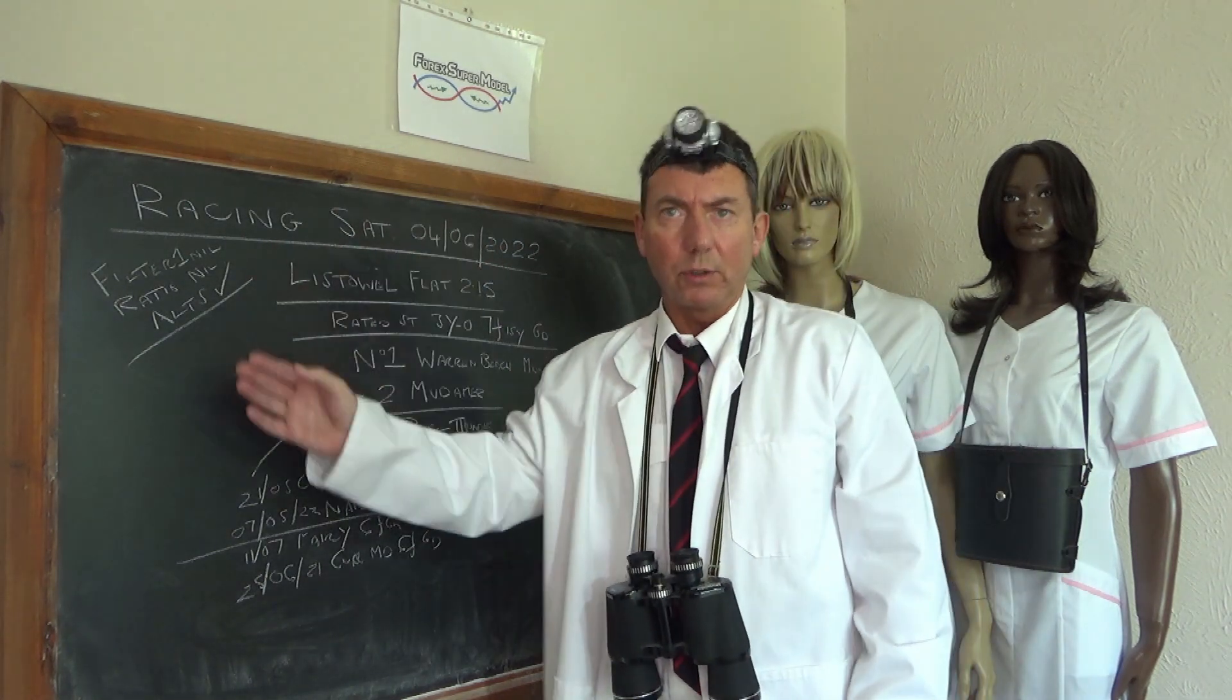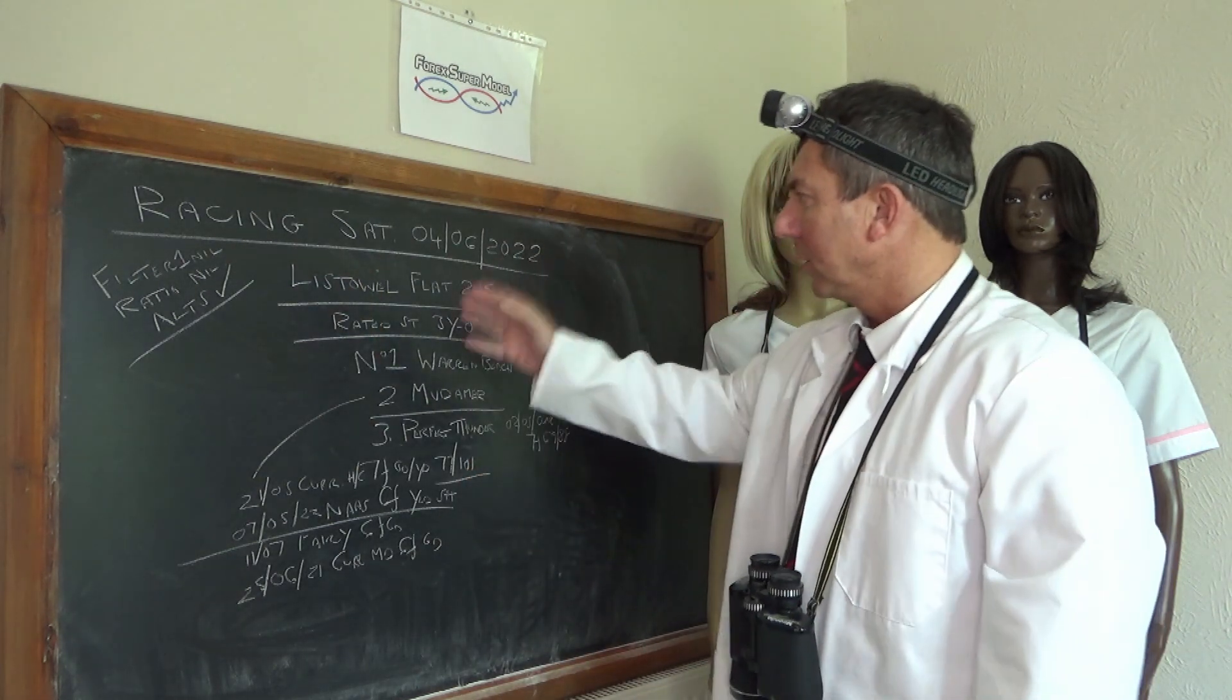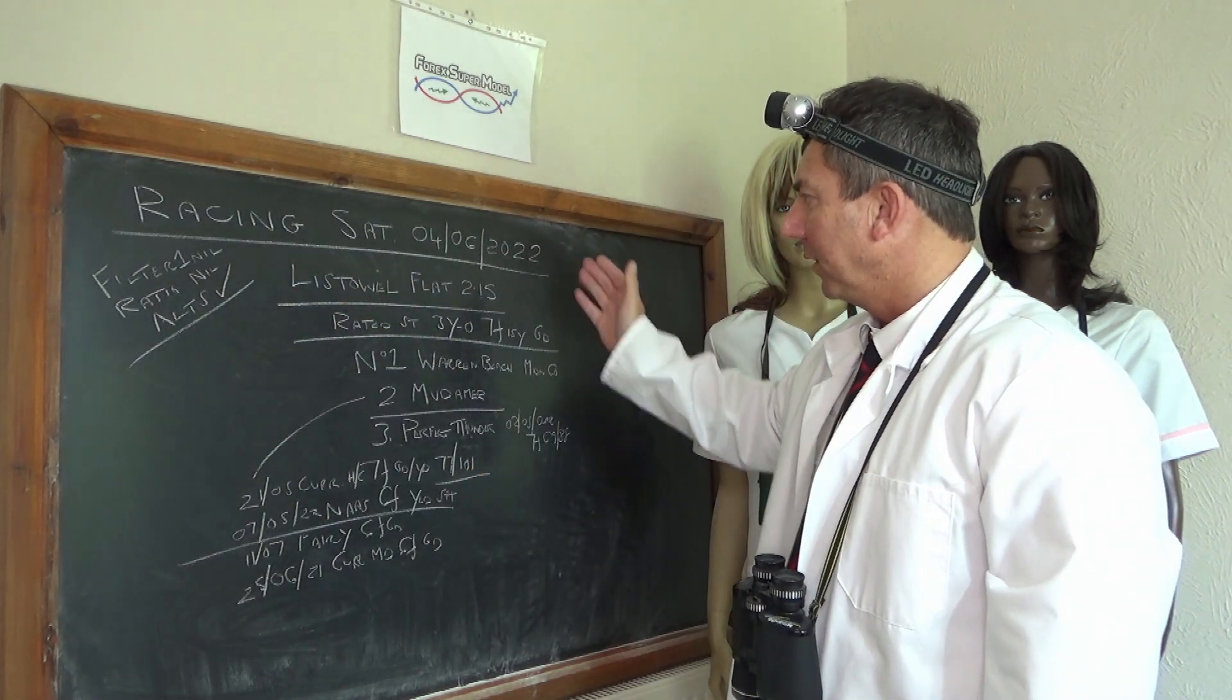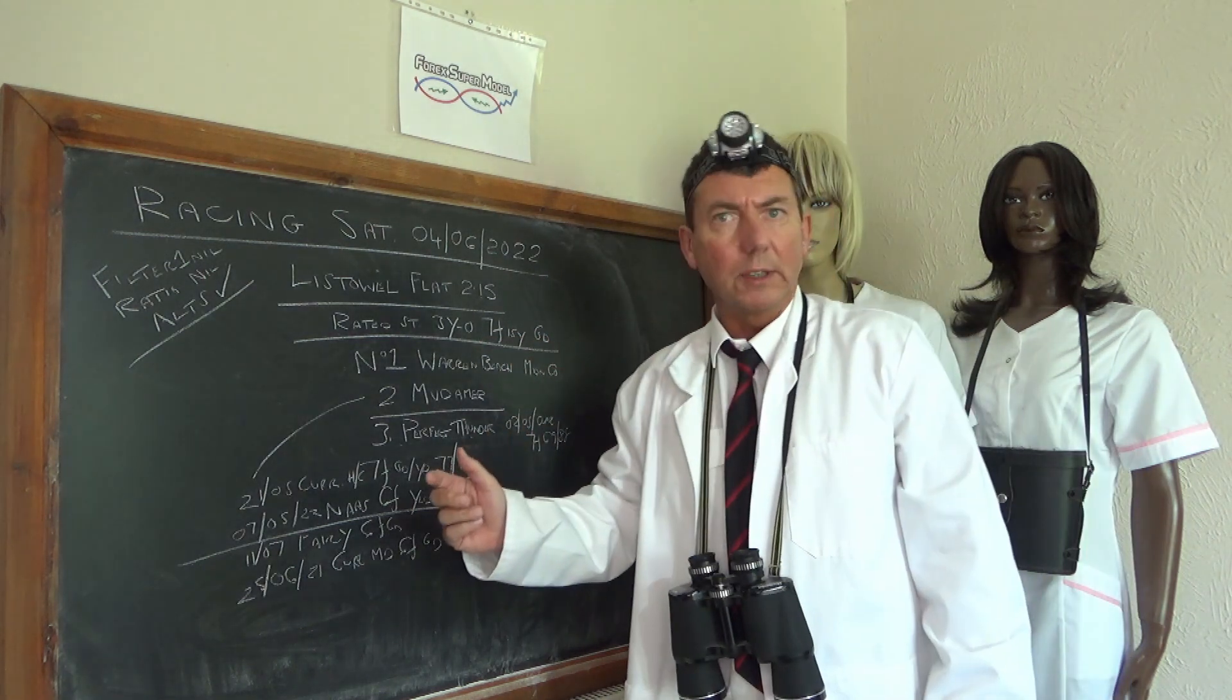We've ridden up to today's racing then for Saturday the 4th. We've got no filter 1 which is our structure filter. We've got no ratio filter either but we do have an alternate and we're off to Ireland. It's Listerwell flat, 215, rated stakes, 3 year old, 7 furlong 15 yards, good. There's three horses in that race.